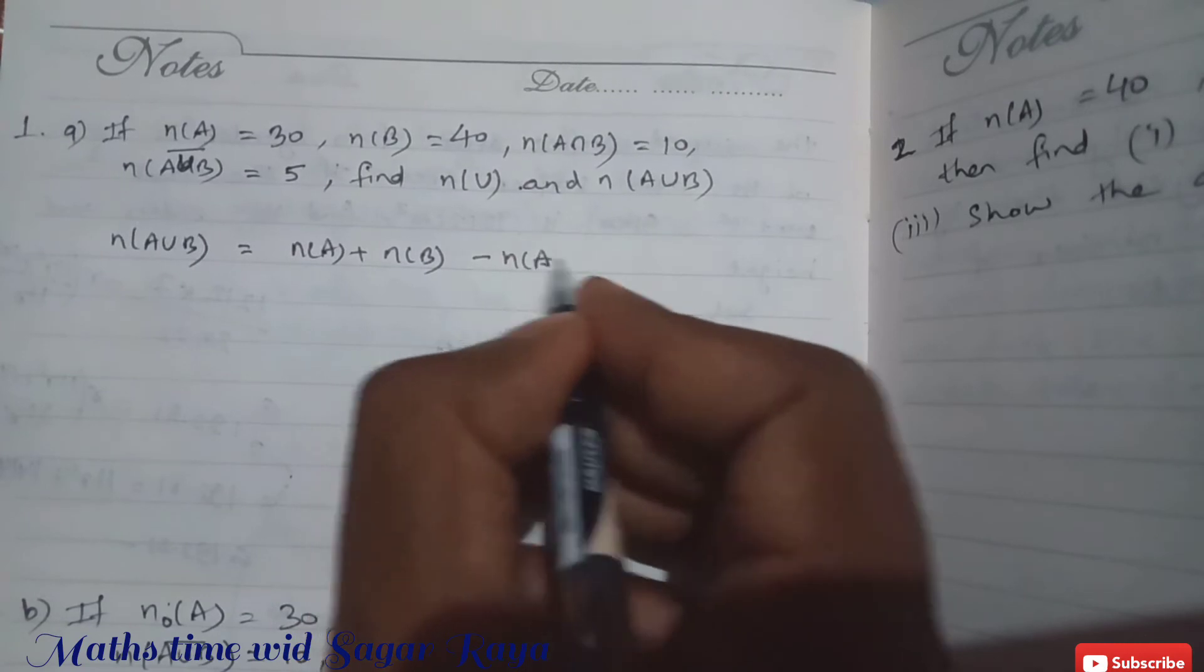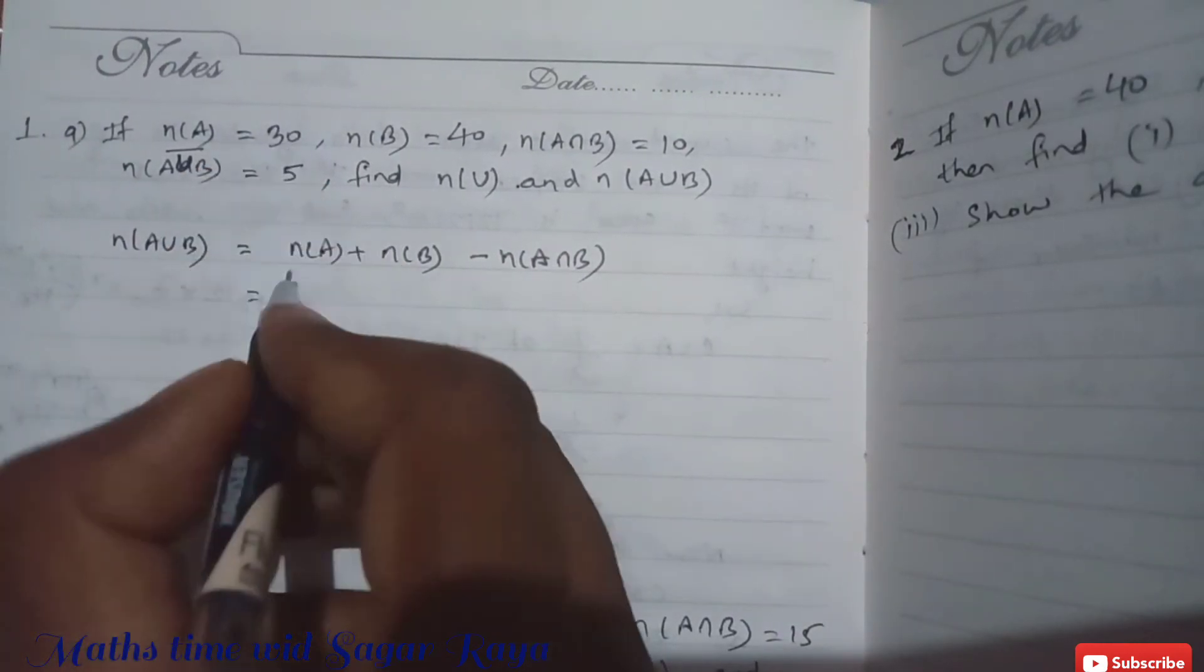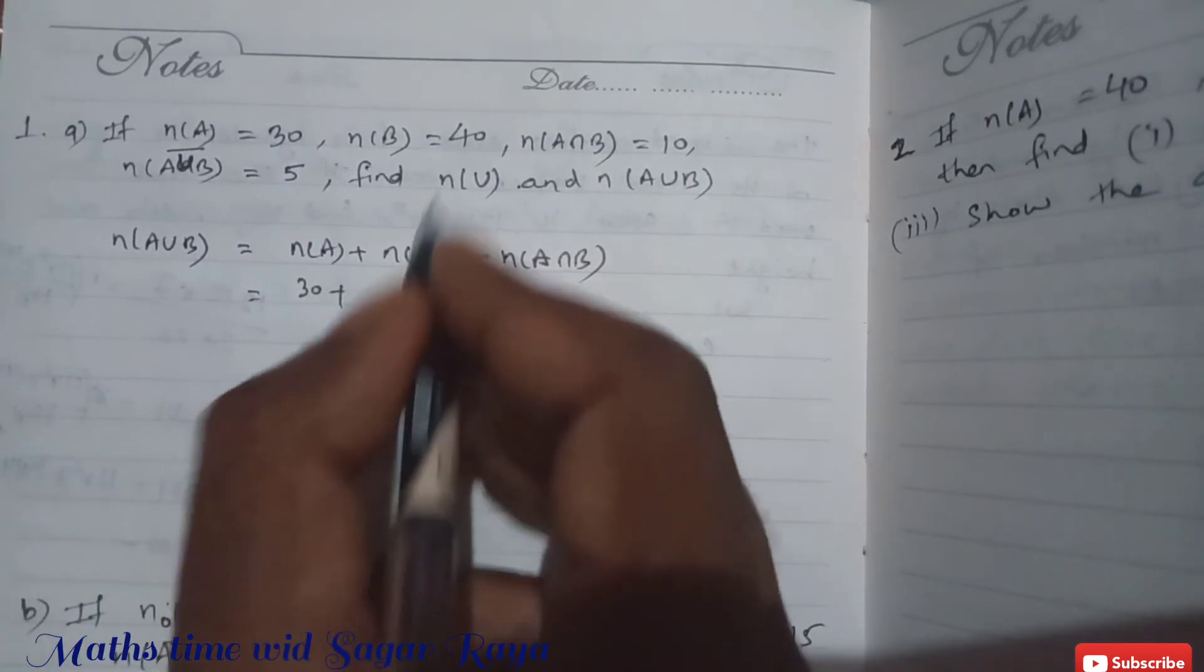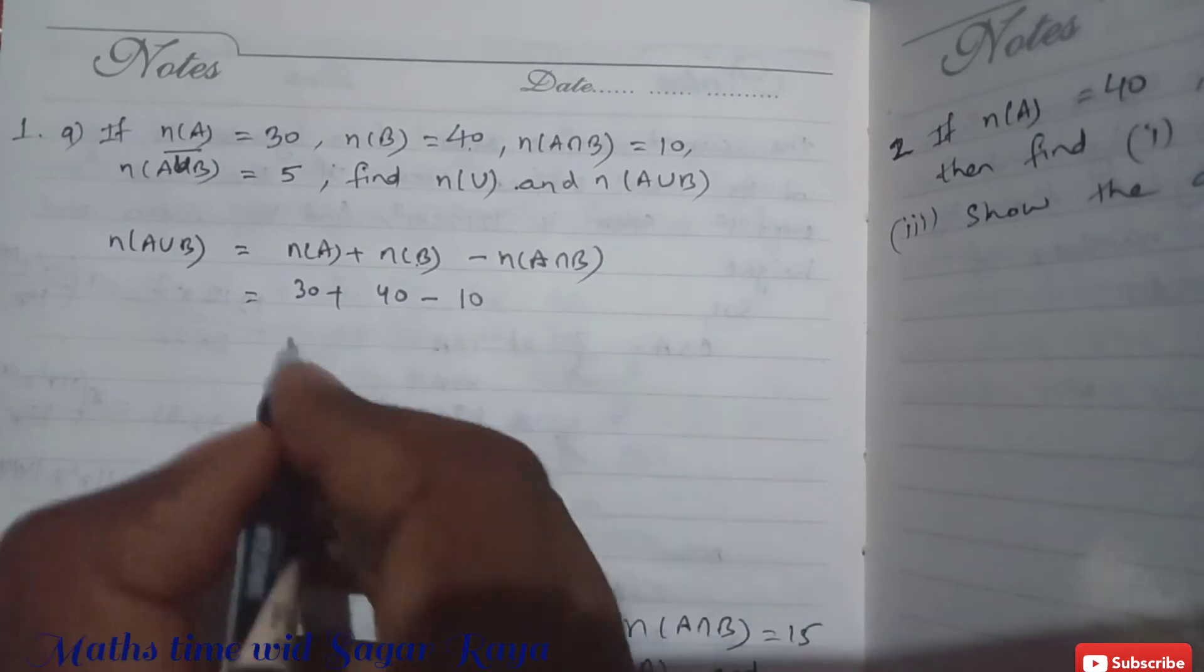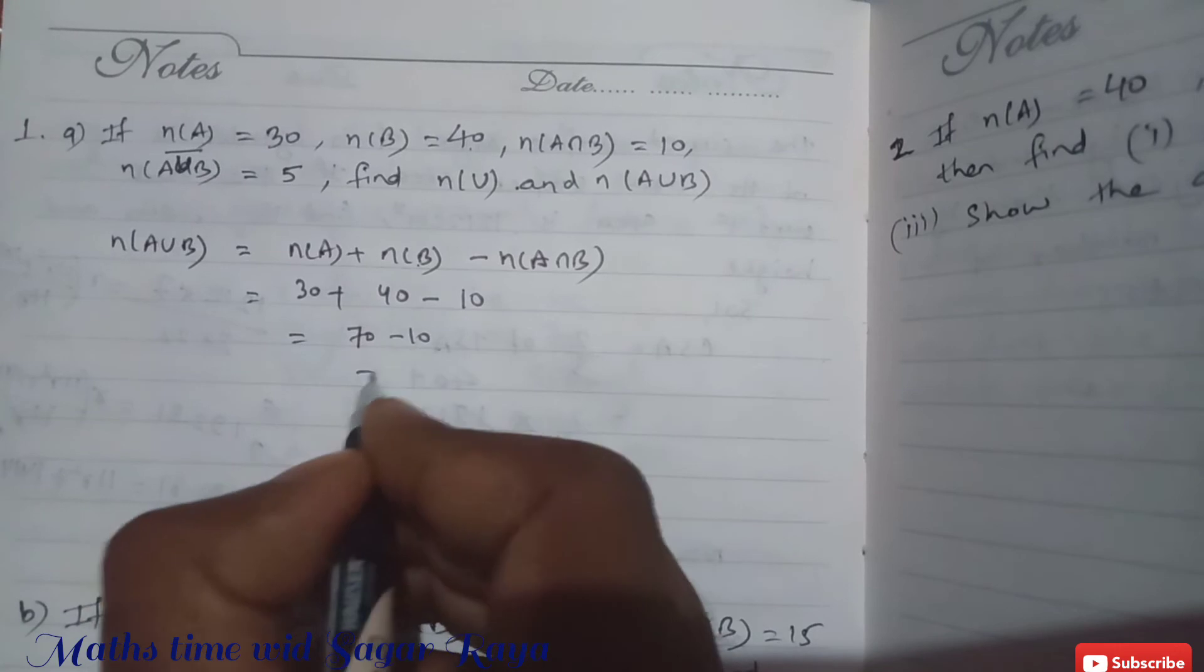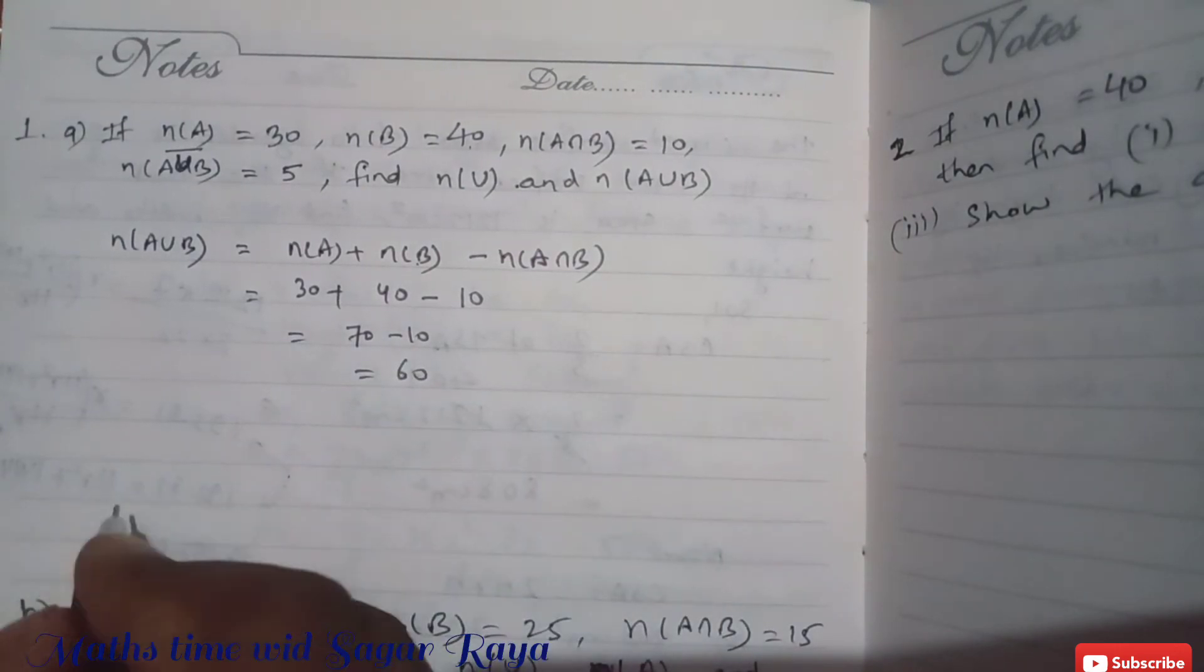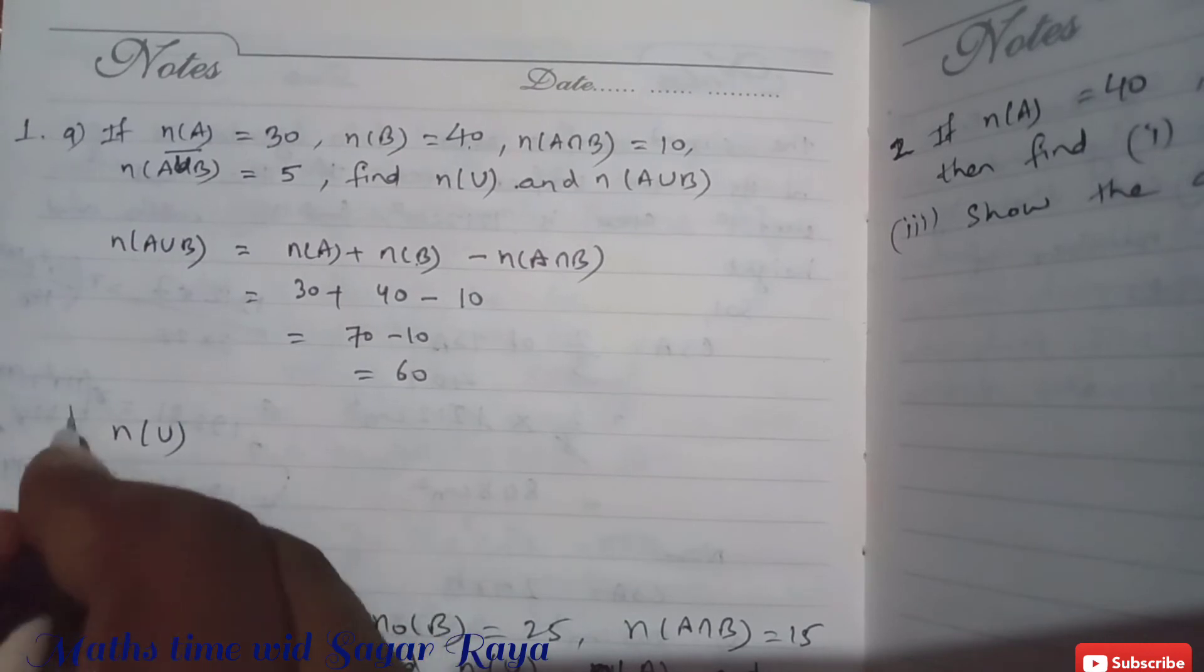So n(A) is given as 30, n(B) is given as 40, and n(A∩B) is given as 10. So 30 + 40 is 70 minus 10, which is equal to 60.